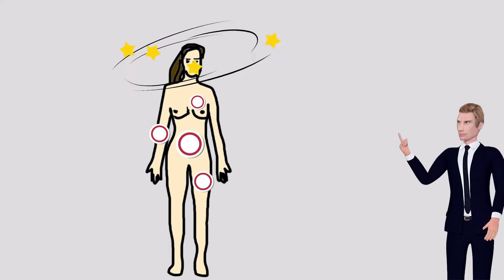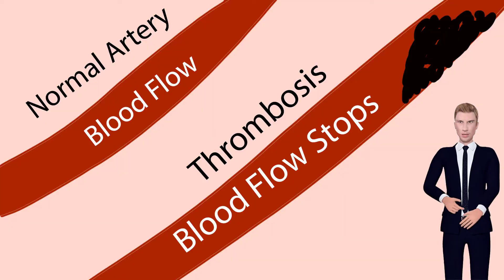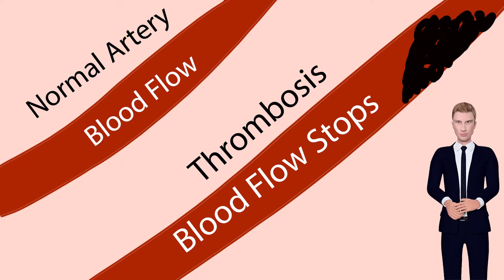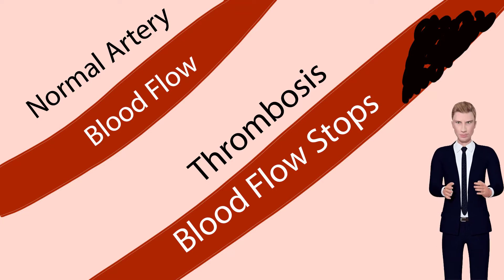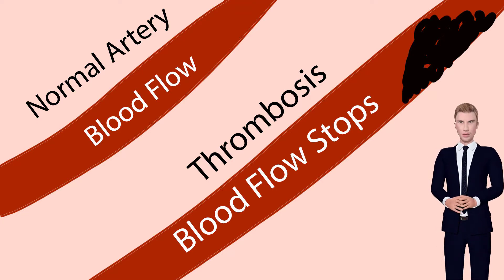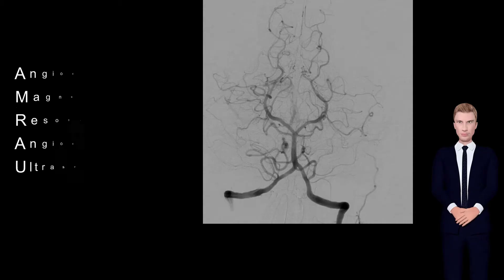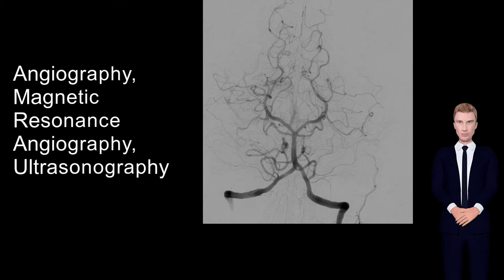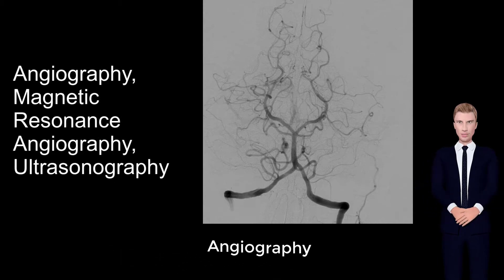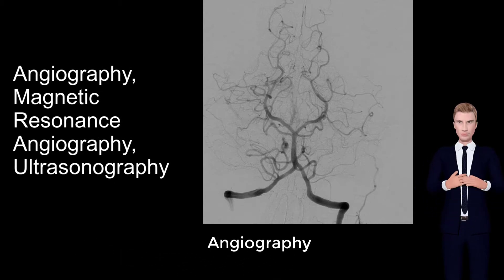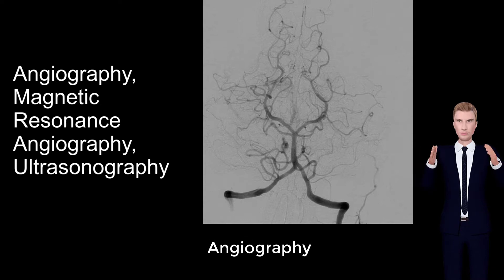A complication of arteritis is thrombosis, which can be fatal, causing blindness or death of organ or tissue. Various imaging techniques may be used to diagnose and monitor disease progression. Imaging modalities may include direct angiography, magnetic resonance angiography, and ultrasonography.